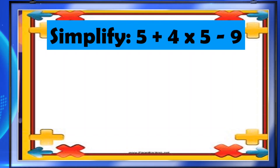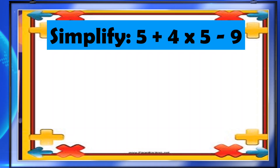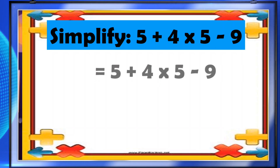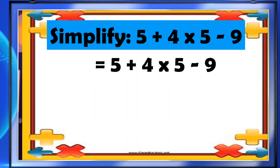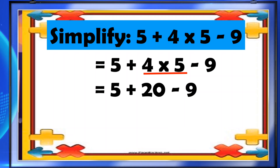Our first example: simplify 5 plus 4 times 5 minus 9. Let's apply the MDAS rule. Remember that multiplication and division are performed first from left to right, followed by addition and subtraction, whichever comes first from left to right. In our example, we have three operations: addition, multiplication, and subtraction. The first thing we're going to do is to multiply. We have to multiply 4 and 5. 4 times 5 is 20. Now we have 5 plus 20 minus 9.